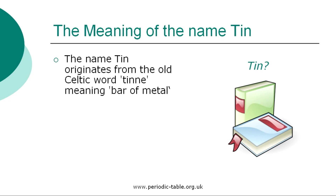The name originates from the old Celtic word 'tin', meaning bar of metal. Tin was very important as a required substance in the production of bronze. A late Bronze Age shipwreck was discovered off the coast of Turkey, containing more than 300 copper bars and about 40 tin bars. These bars of metal would have been used in trade. The Greeks imported the metal from Cassiterides, meaning the Tin Islands, which are believed to be a reference to Great Britain, which had tin mines in Cornwall.